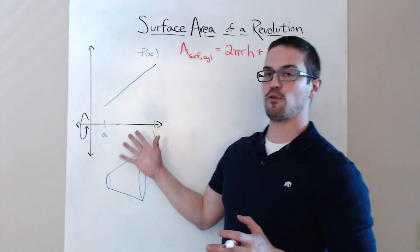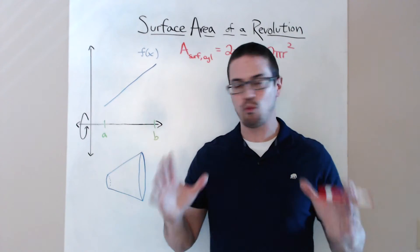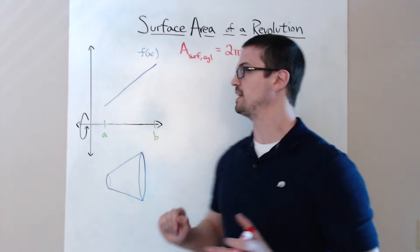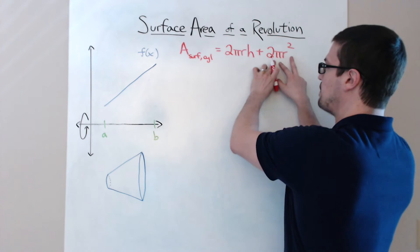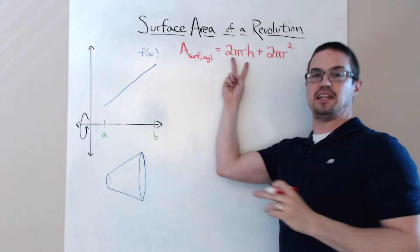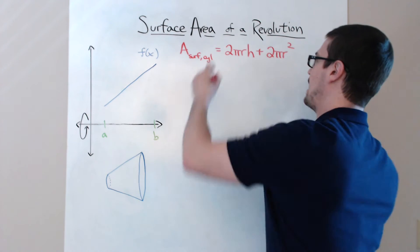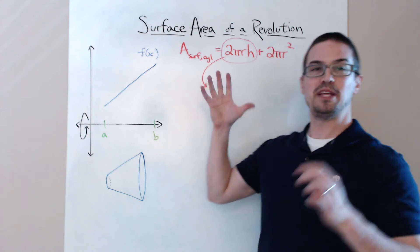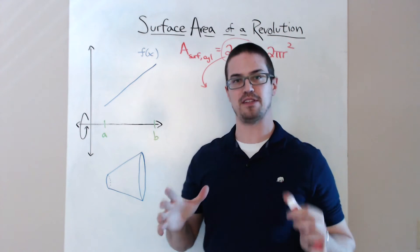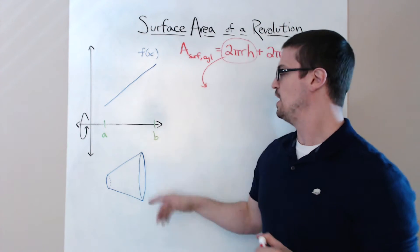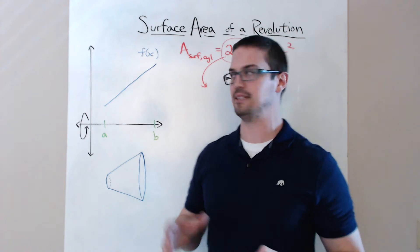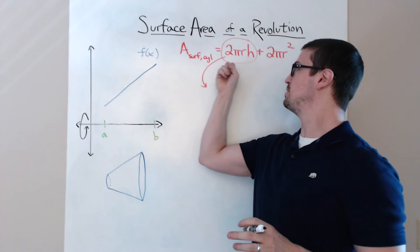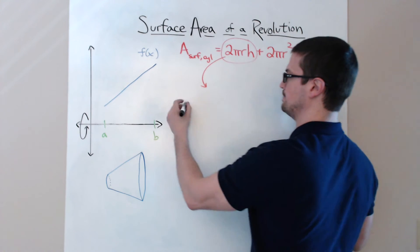The surface area of a revolution does not worry about the ends. So we're not worried about the end circles on either side. We do not need to worry about the 2πr² term. We only need to worry about the 2πrh here. So we're only going to be using 2πrh to figure out the surface area of the solid of revolution — we're not going to worry about those ends.